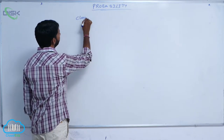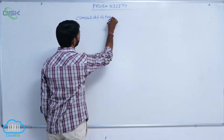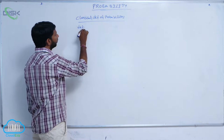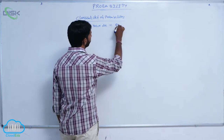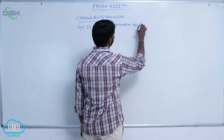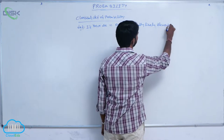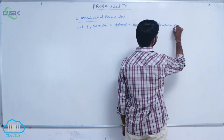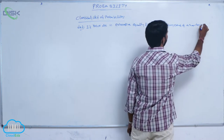Classical definition of probability: if there are an exhaustive, equally likely elementary events of a random experiment,